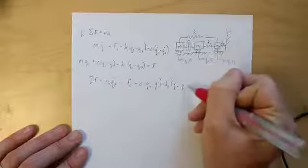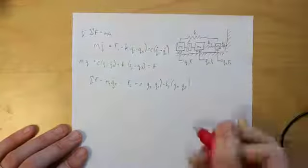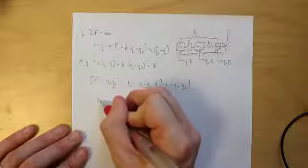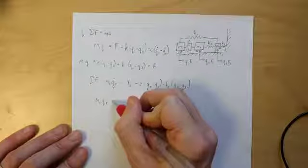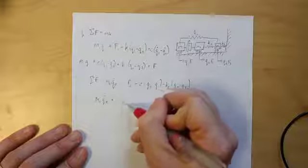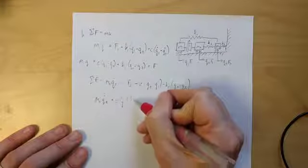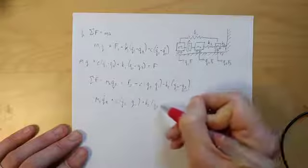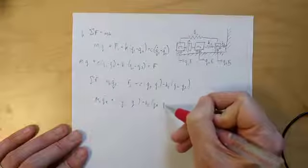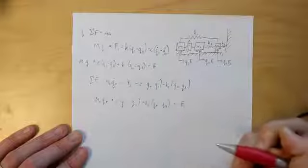Bring that over to the other side, M2 Q2 double dot, plus C times Q2 dot minus Q1 dot, plus K2 times Q2 minus Q3 is equal to F2.